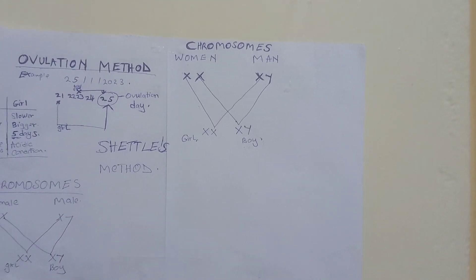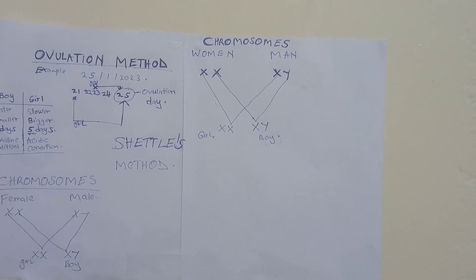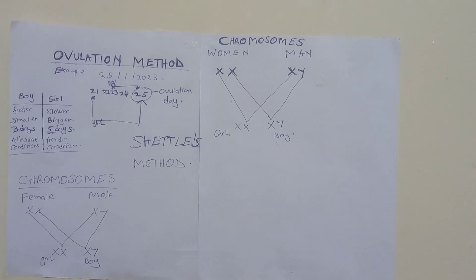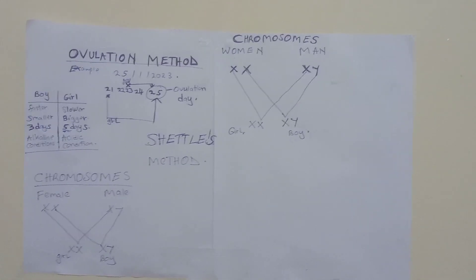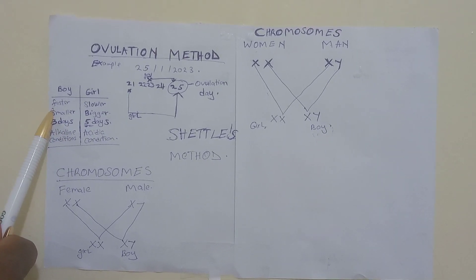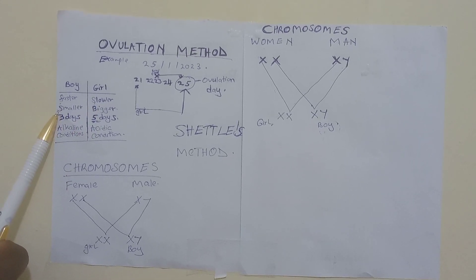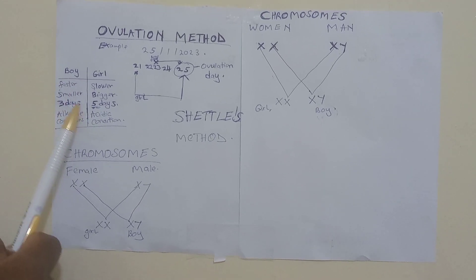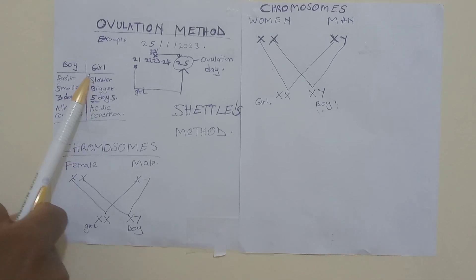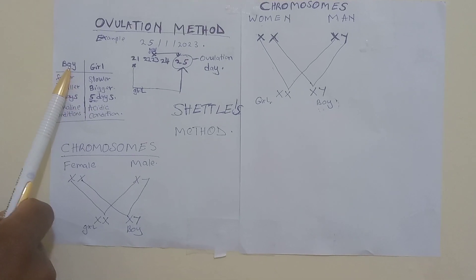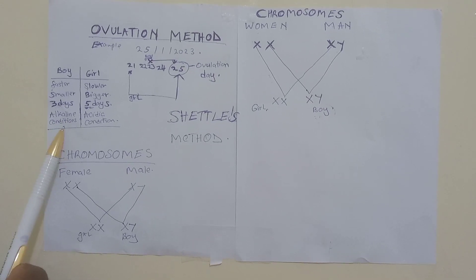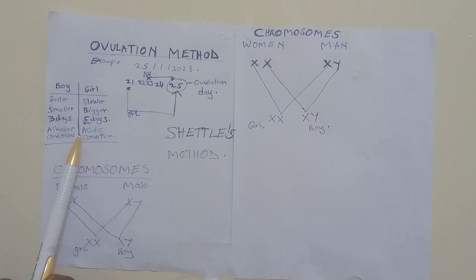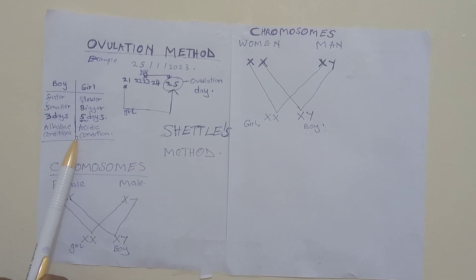Dr. Shettles came up with various differences between boy sperm and girl sperm during his research. He stated that boy sperm are faster to travel and smaller than girl sperm. Boy sperm take three days in the female reproductive system, while girl sperm take five days. Boy sperm are favored in alkaline conditions, and girl sperm are favored in acidic conditions.